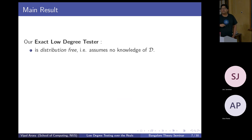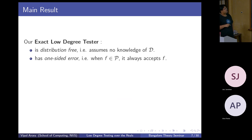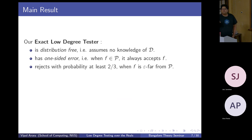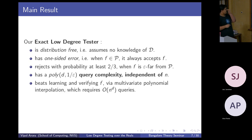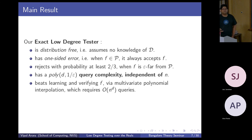Here's the main result. Our exact low-degree tester is distribution free — it assumes no knowledge about D; only sampling access to D is required. It has one-sided error: when f is in P it always accepts. It rejects with probability at least two-thirds when f is epsilon far from P. Most importantly, it has query complexity independent of n, only poly in d and 1/epsilon. The brute-force approach would use multivariate polynomial representation to learn a degree-d n-variate polynomial, requiring exponential in d queries. Our approach is just poly in d and 1/epsilon and independent of n.